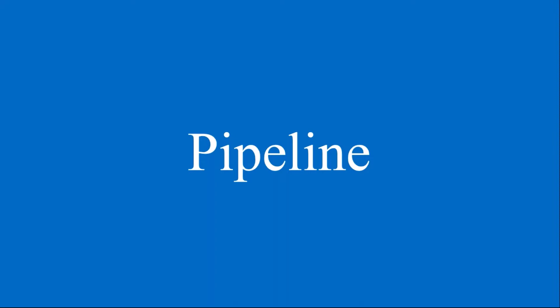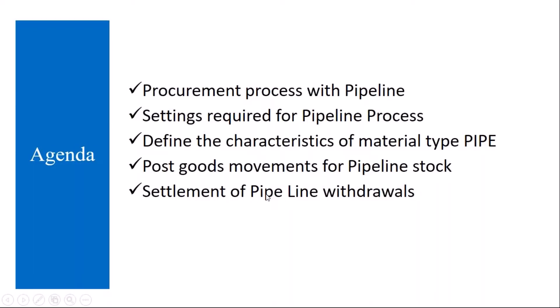We will be starting our next topic: pipeline. The topics we are going to cover include the procurement process with pipeline, how the procurement process happens using this pipeline functionality, and the settings required for the pipeline process — what master data settings we need to do in the SAP system to execute this pipeline process.